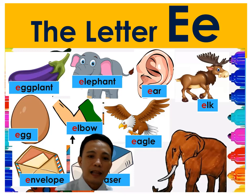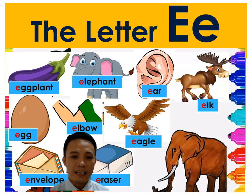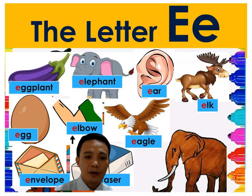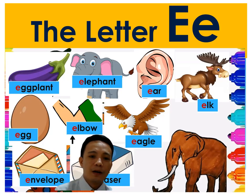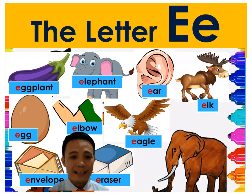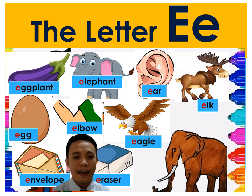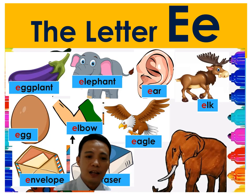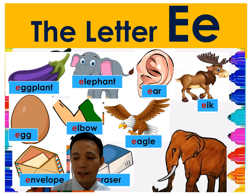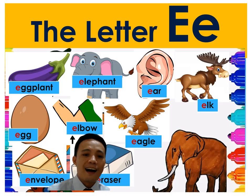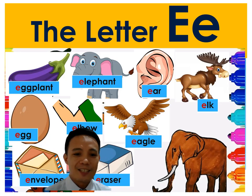E is for elephant. E-E-elbow, E-E-elbow, E — elbow. E is for envelope. E-E-envelope, E-E-envelope, E-envelope. E!